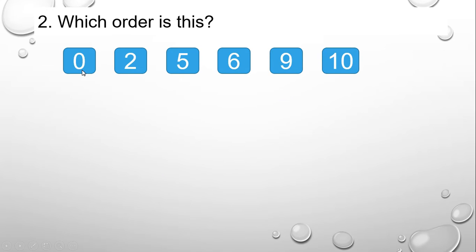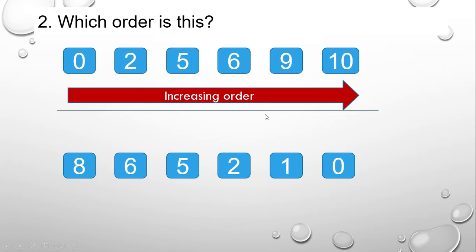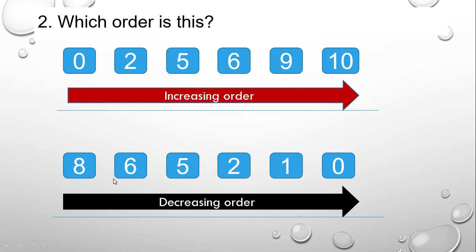From 0, 2, 5, 6, 9, and 10 — 0 is small and 10 is big, so we call this the increasing order.